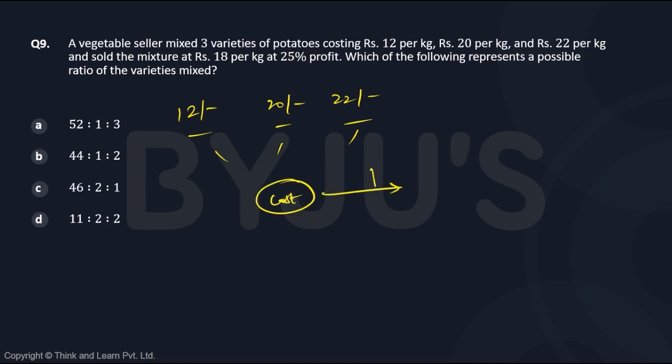This cost you are selling it at 25% profit. And this final selling price is 18, which means the cost price into 25% increase that is 5 by 4 should give you 18. So the cost price after mixing things should be 18 into 4 by 5, which is 72 by 5. Keep it aside.